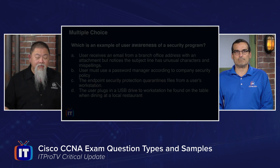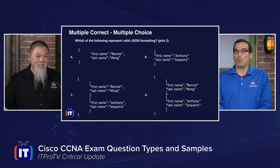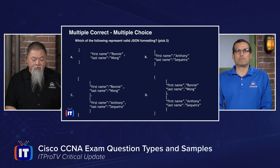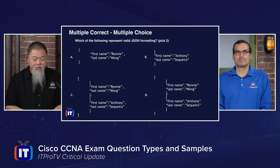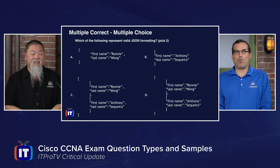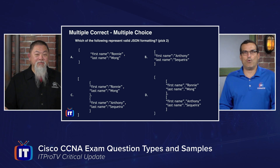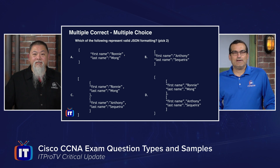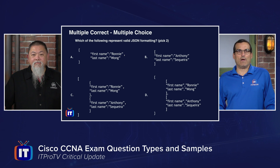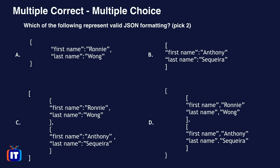Moving on to multiple answer, or multiple correct, questions — a bit harder. This question asks which are examples of valid JSON formatting, and you must pick two. This means you actually have to know JSON formatting. Looking at the options full screen, Anthony begins his elimination: he removes B immediately because it uses square brackets enclosing key-value pairs, which is incorrect. Two answers are correct here.